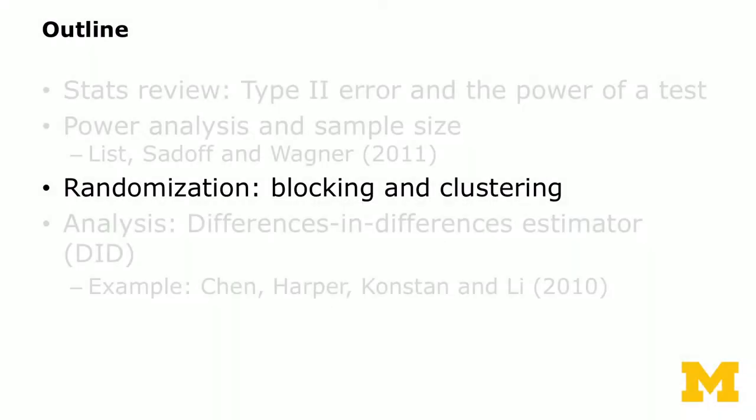We're going to move on to the next topic, which is different ways of randomization. We're going to talk about two specific randomization techniques: one is called blocking, the other one is called clustering.